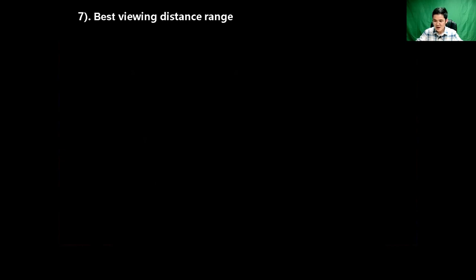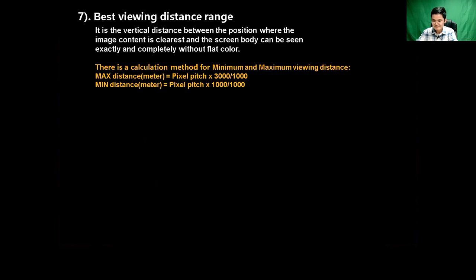The second parameter: for LED displays, there is a best viewing distance range. What is the best viewing distance range? It is the vertical distance between the position where the image is clear and the screen, where it can be seen exactly and completely without flat color. There is a calculation method: Maximum viewing distance = pixel pitch × 3000 ÷ 1000 (meters); Minimum viewing distance = pixel pitch × 1000 ÷ 1000 (meters).